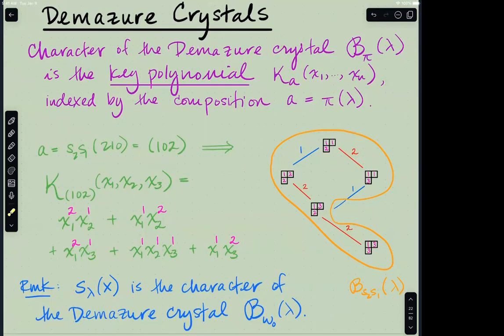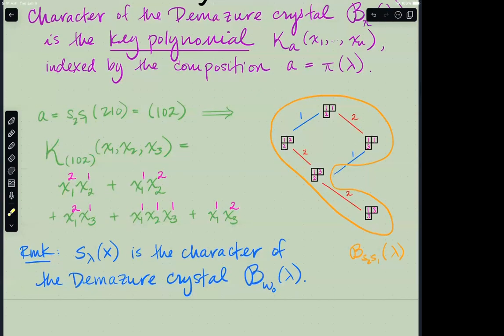And so just as a remark to sort of tie the big full crystal picture together to the Demazure crystal, the Schur polynomial is actually the character of a Demazure crystal as well. It's just when you take pi to be the longest element w_0, which doesn't provide any restrictions on your operators, in a way that will, yeah it doesn't provide any restrictions that will affect your overall vertex set that you obtain. And so you can get the Schur polynomials as a special case of this construction as well, where you sort of take the biggest possible permutation.